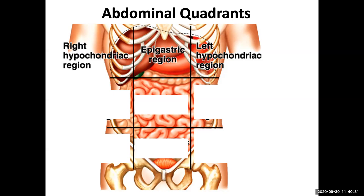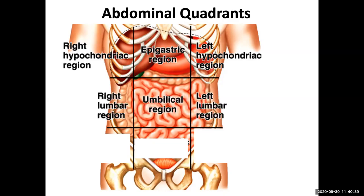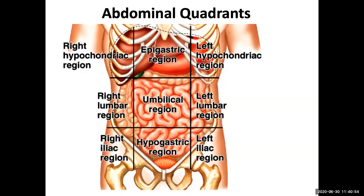In between those two areas, we have what's referred to as the epigastric region. Just below these regions, we get to the umbilical region, which is basically where your belly button should be. To either side, we get the right and left lumbar regions. Going even further below, more inferior, we get to the hypogastric region, and then the iliac or inguinal regions — right and left iliac, or right and left inguinal regions.